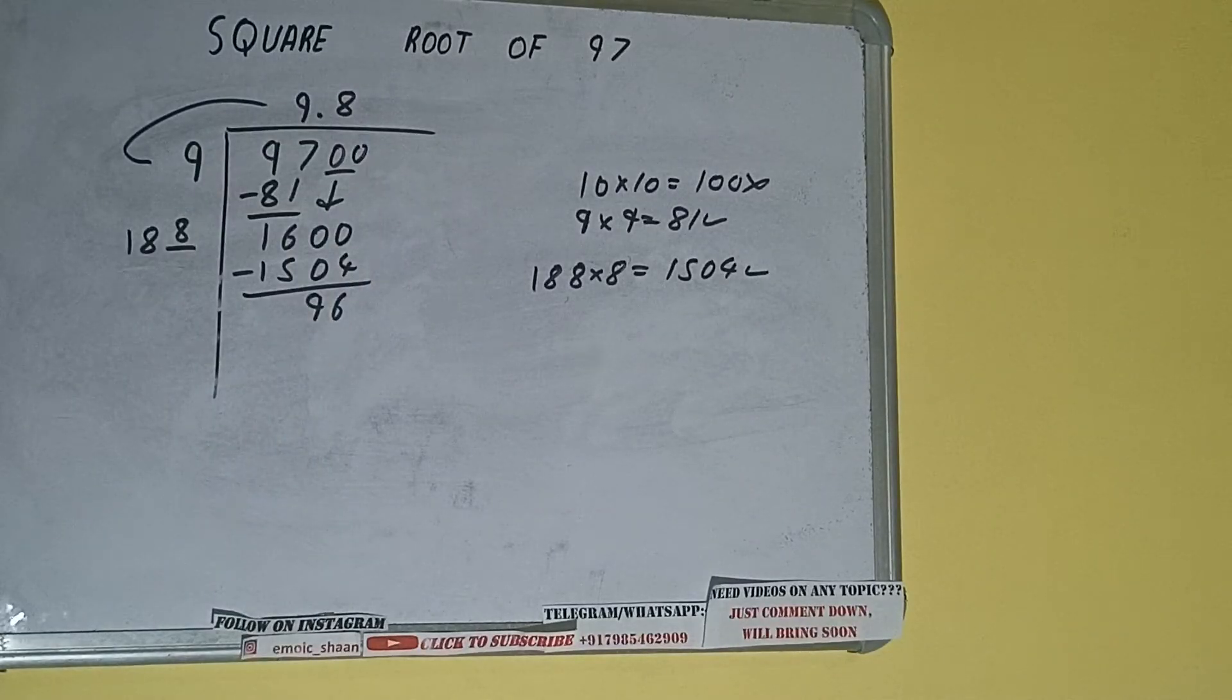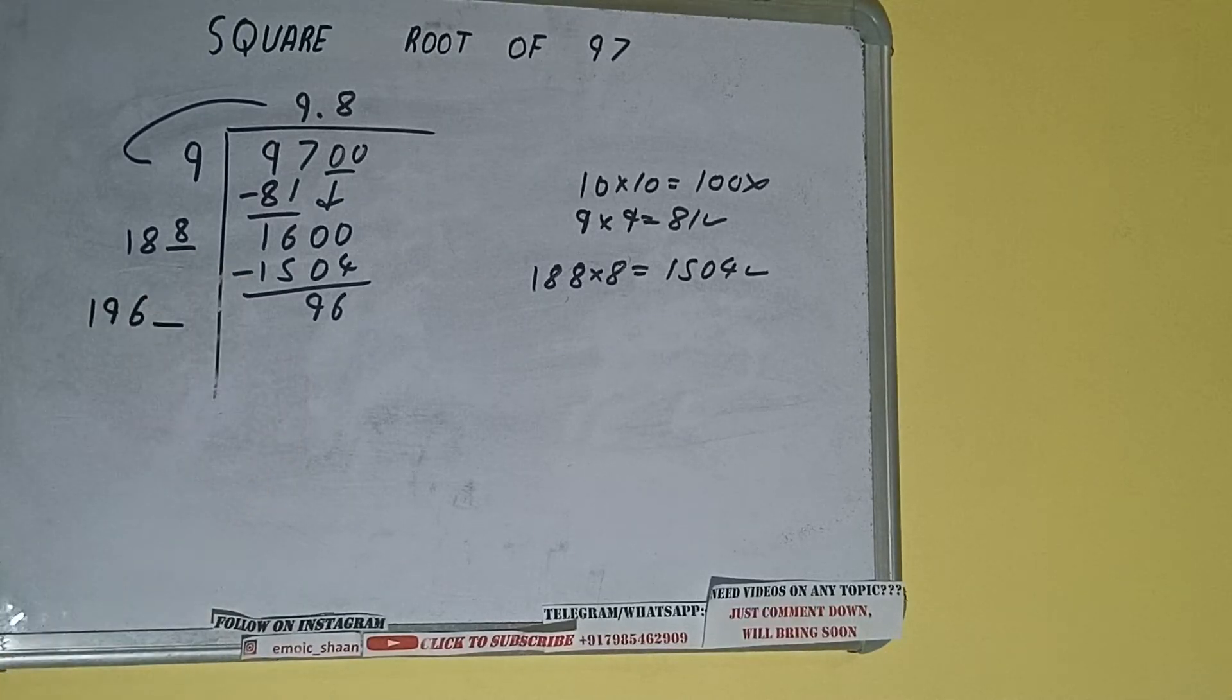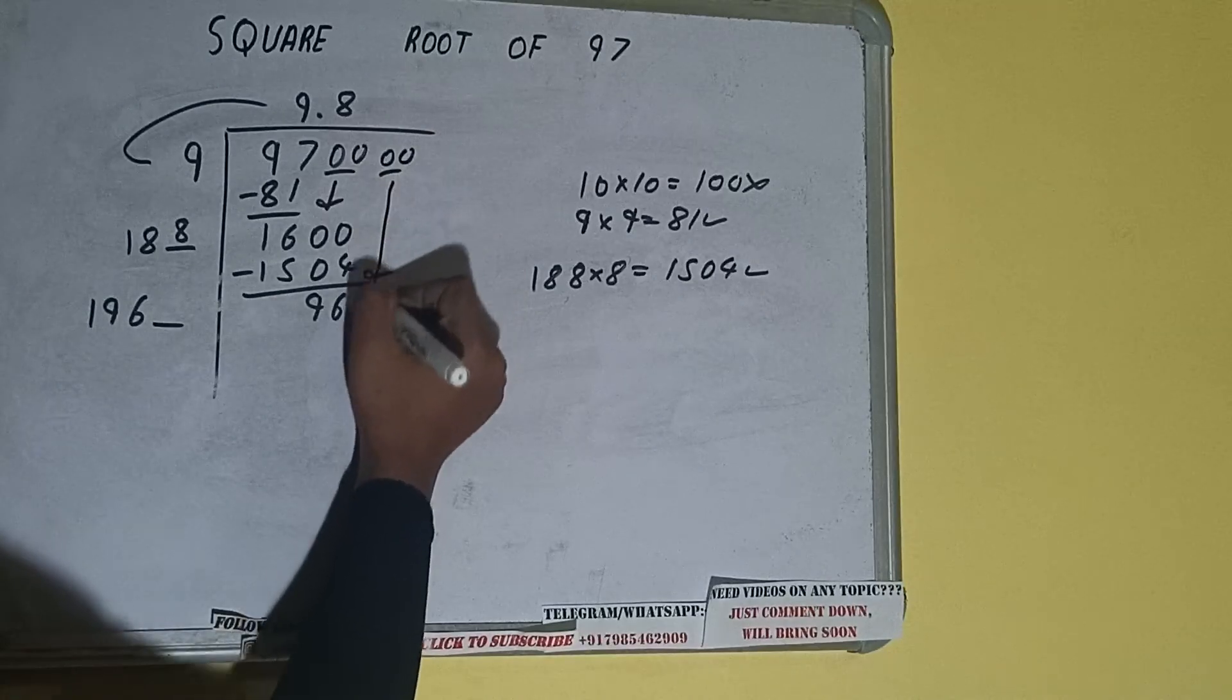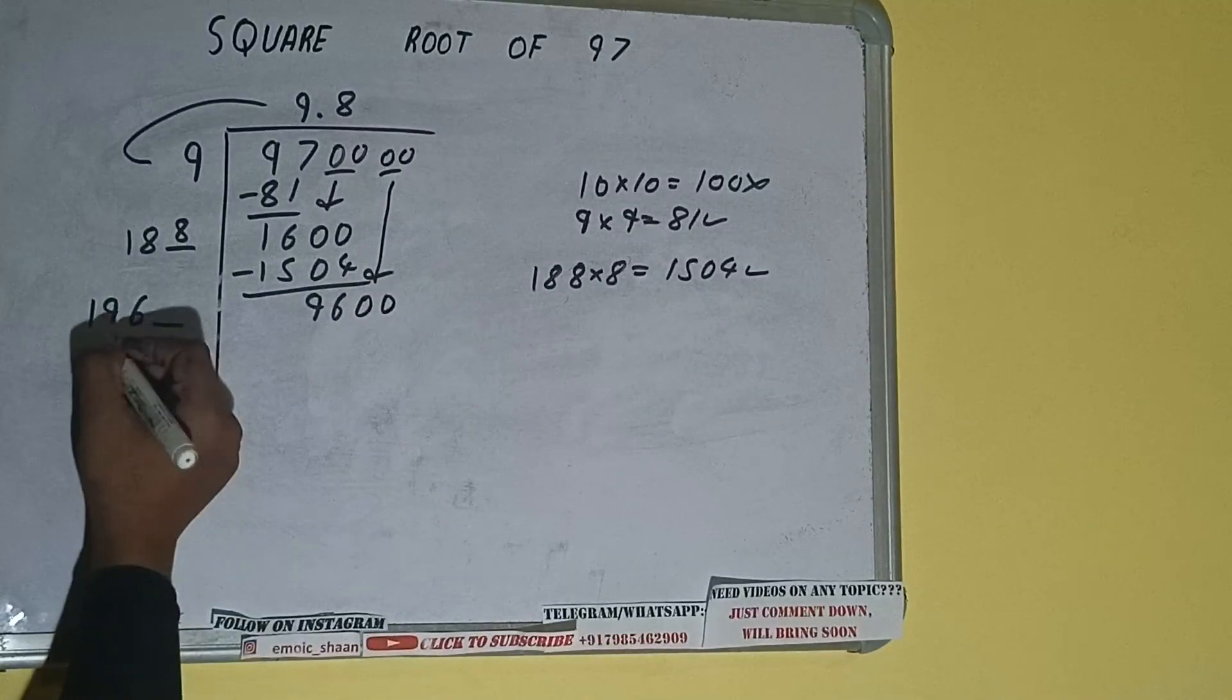Now 188 into 8 we did, so add both. So 188 plus 8 will be 196, and one digit extra. And this number we need to make it big, so bring the next pair of zeros down, and it will be 9600.